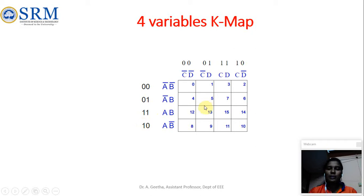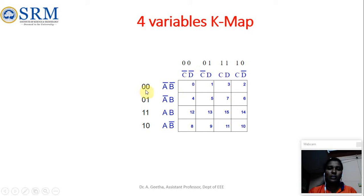Similarly in the column we have C and D, giving 4 combinations: 0,0 - 0,1 - 1,1 - 1,0. To find the cell value, check the corresponding row binary equivalent and column binary equivalent. For example, a cell with row 0,0 and column 0,0 gives 0,0,0,0 which is 0. For a cell with row 0,1 and column 0,0, that is 0,1,0,0 which equals 4. You can use the 8-4-2-1 method for finding the decimal equivalent of a binary number. Similarly, each cell can be numbered by checking its row and column binary equivalents.